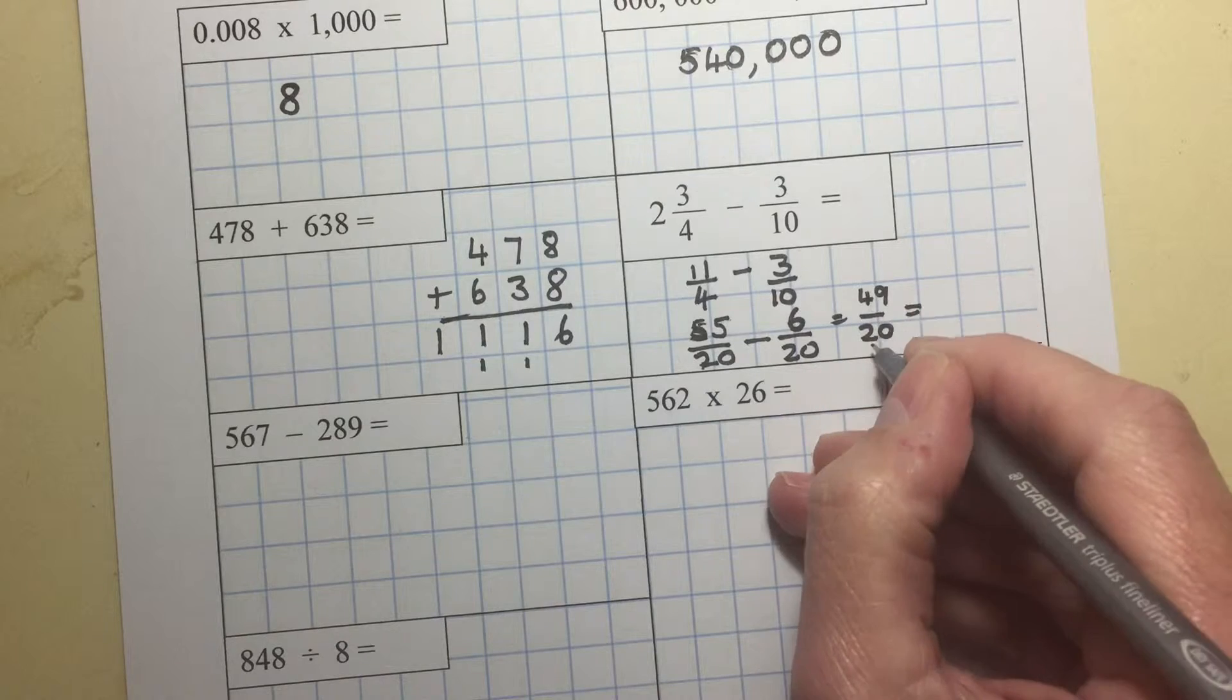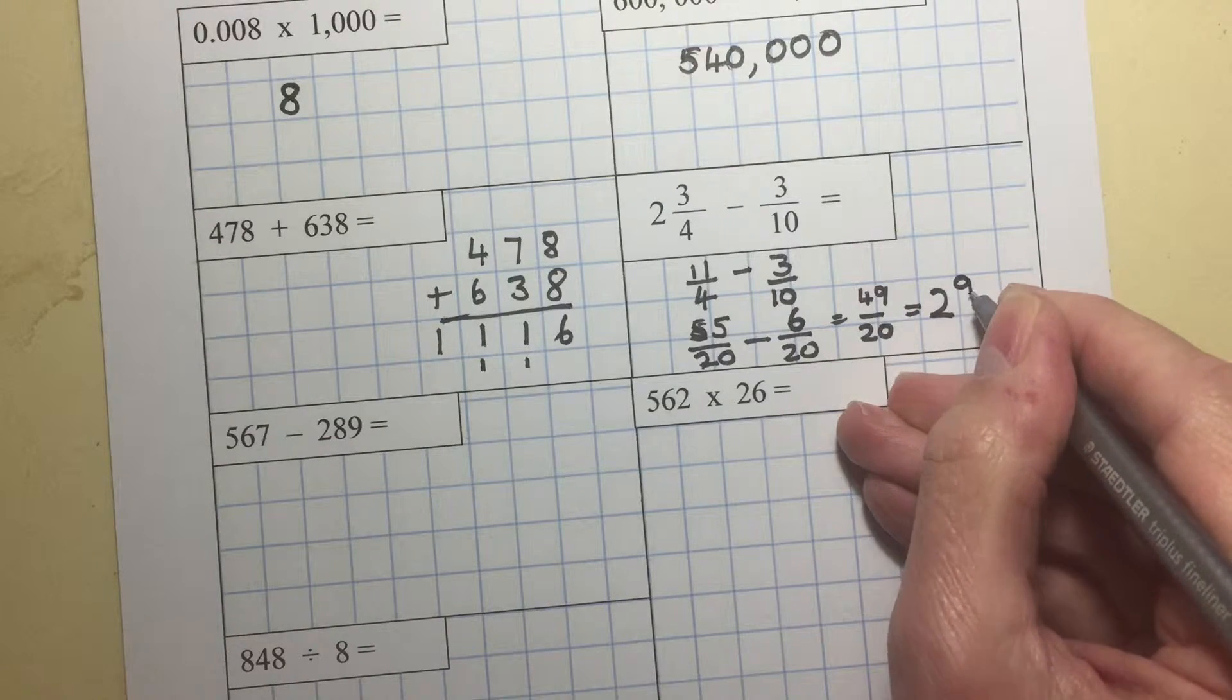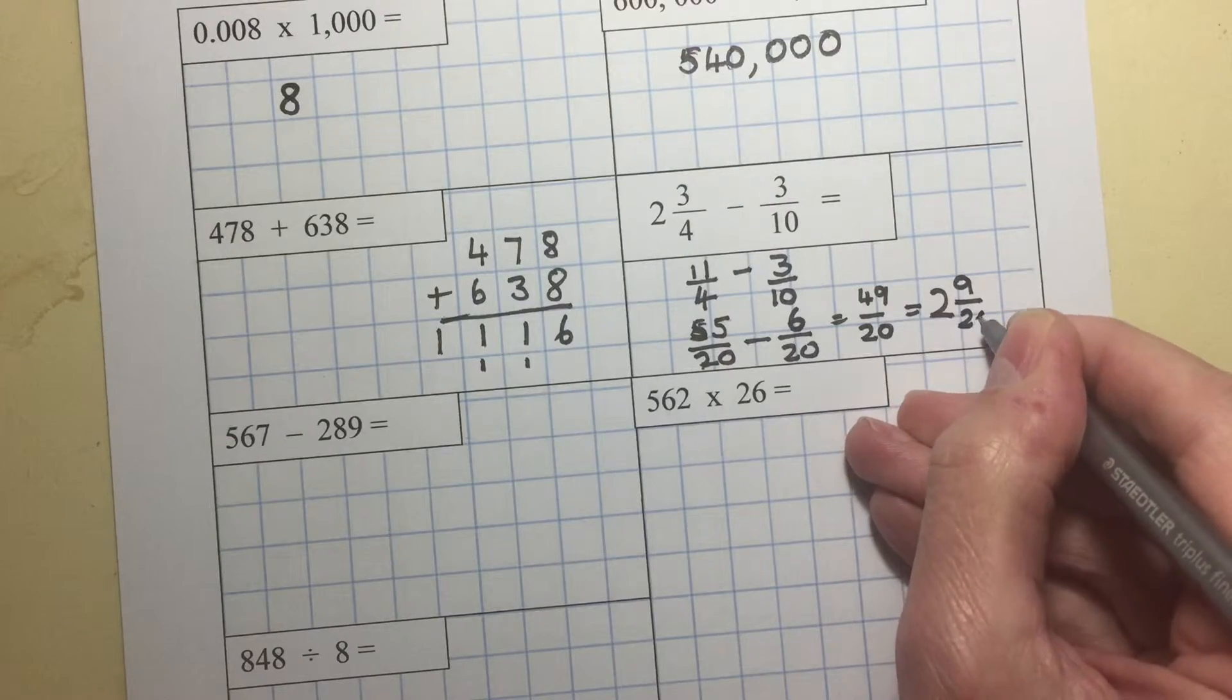40 over 20, well 40 over 20 is 2. So it's 2 and 9 over 20.